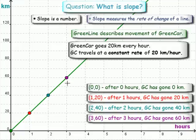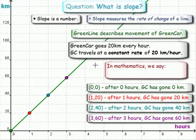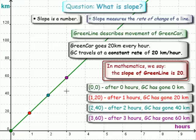What do we say about green line in mathematics? We say the slope of green line is 20. The rate of change is 20. So the slope of green line is 20. So 20 kilometers per hour in real life means a line with a slope of 20.